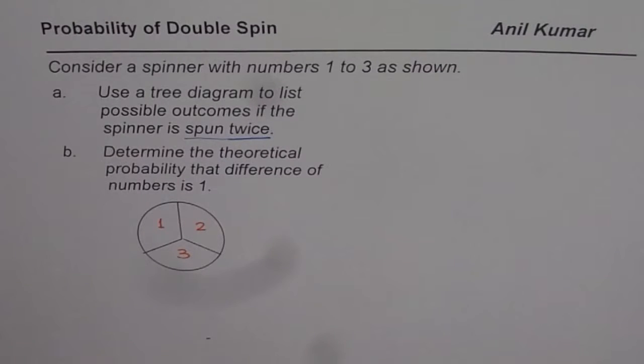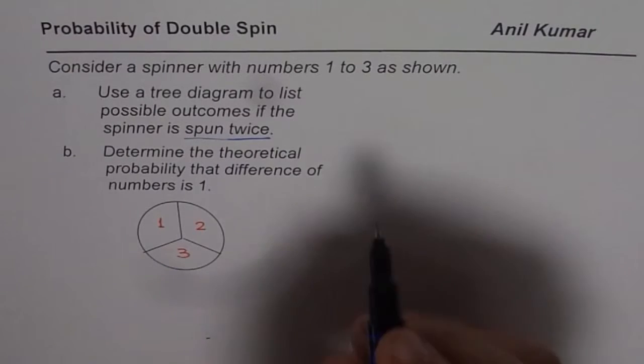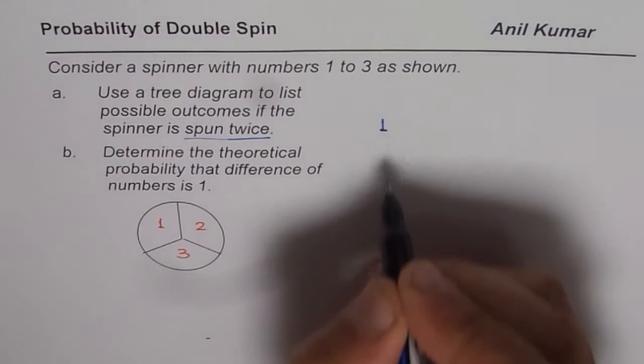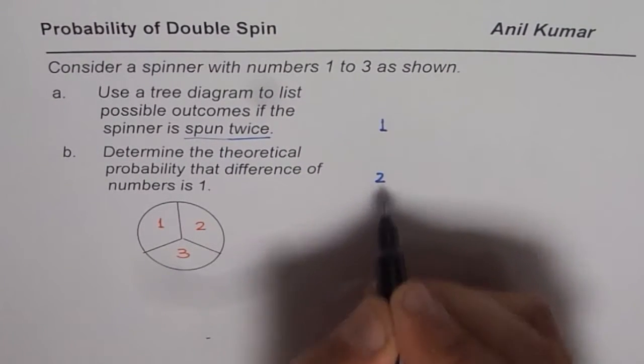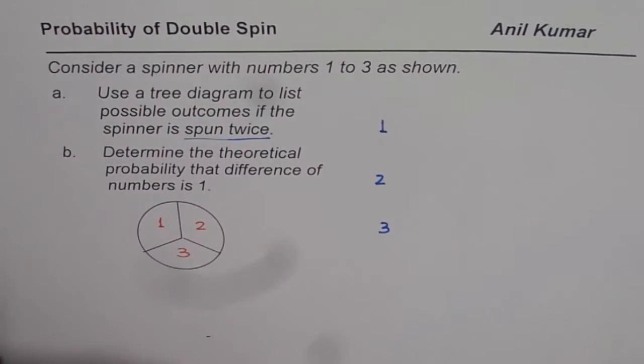Now in this particular case, we are given a spinner where we can spin numbers 1, 2 or 3. So first time when you spin, you could get either 1 or you could get 2 or you could get 3. Now you are spinning it twice. So second time again, you could get 1, 2 or 3.